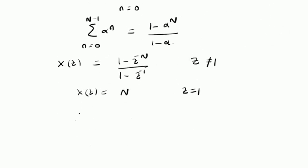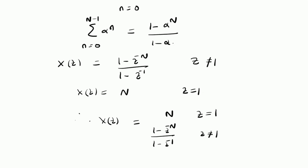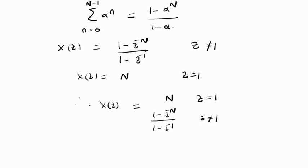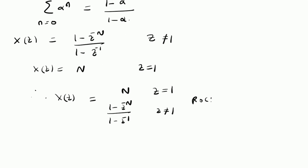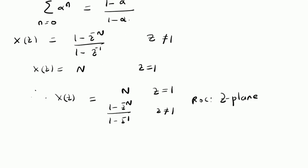Therefore, the final X of Z, that is the Z transform, is given by N for Z equal to 1, and 1 minus Z power minus N divided by 1 minus Z power minus 1 for Z not equal to 1. Coming to the ROC of this Z transform, we can directly look at this series and clearly see that the ROC is the whole Z plane excluding Z equal to 0.